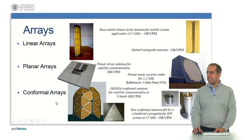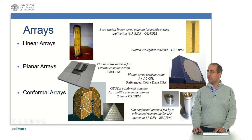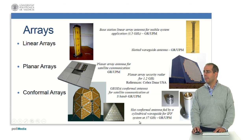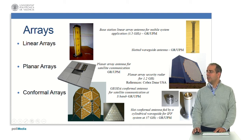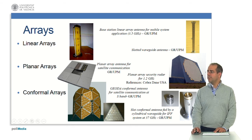Another example of array antennas — we have the conformal array antenna. Here for example the GEODA conformal array antenna for satellite communication at S-band. And here, a slotted conformal antenna fed by a cylindrical waveguide for identification friend or foe system at 37 gigahertz.